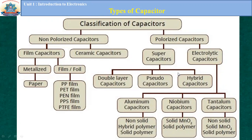Types of capacitors. Broadly, capacitors are classified as non-polarized capacitors and polarized capacitors. Non-polarized capacitors include film type capacitors, metalized capacitors, paper capacitors, and ceramic type capacitors. Polarized capacitors have two type categories: supercapacitors and electrolytic capacitors.